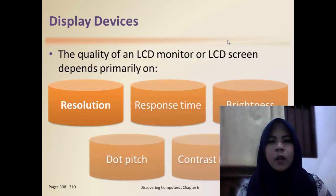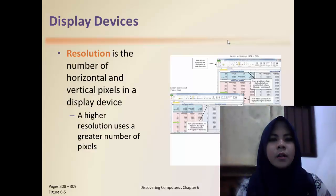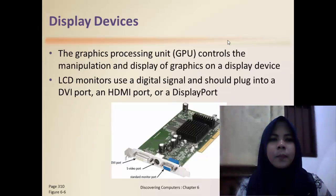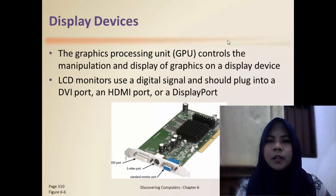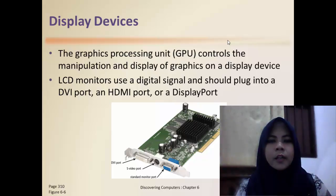The quality of an LCD monitor or LCD screen depends primarily on resolution. Resolution is the number of horizontal and vertical pixels in a display device. The graphics processing unit (GPU) controls the manipulation and display of graphics. An LCD monitor uses a digital signal and can plug into a DVI port, HDMI port, or a DisplayPort.